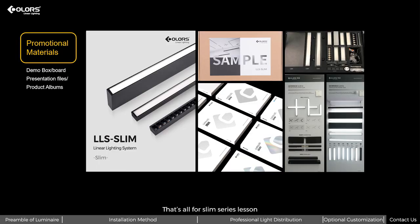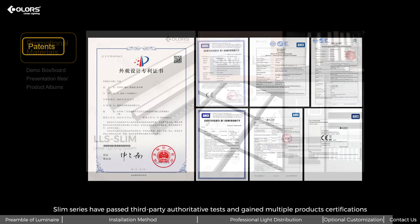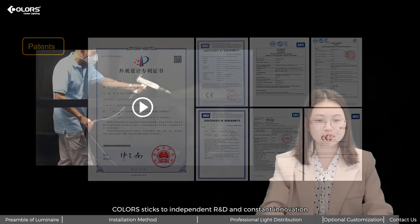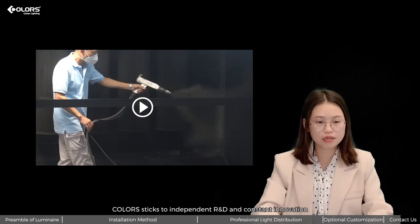That's all for the Slim series lesson. For deeper insight, you can check out promotional materials inclusive of demo box, demo board, presentation files and product albums. Five installation methods correspond to five models, and again multiple product certifications including appearance design, patents, safety certifications. Colors stick to independent R&D and constant innovation.